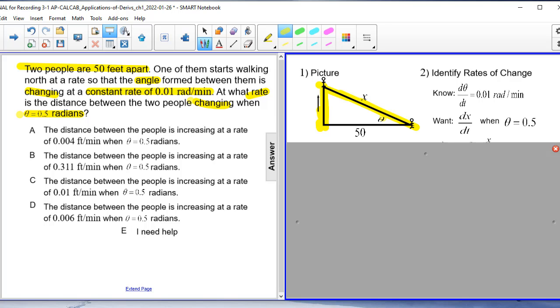We're told that d theta dt is equal to 0.01 radians. What we want to find is dx dt, that's when this distance right here is changing, when theta is equal to 0.5. I'm just going to erase this for a second because I come back to this to form our equation.